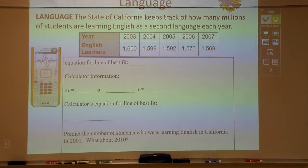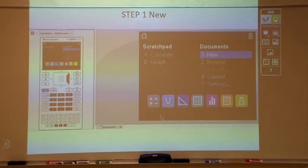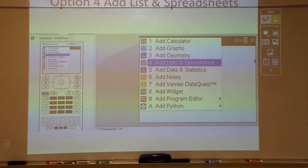So here we have some numbers. If I want to find out what kind of linear regression it is, I'm going to go to my calculator. New, and in it, I'm going to hit option 4 for add lists and spreadsheets.